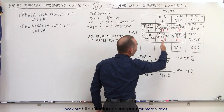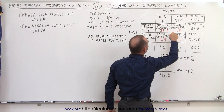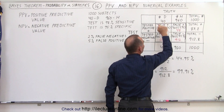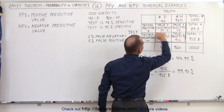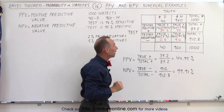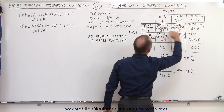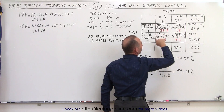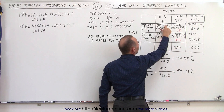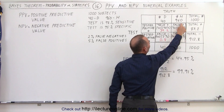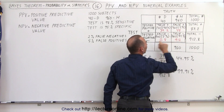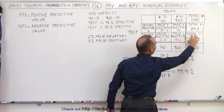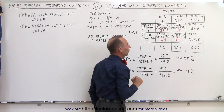On the vertical columns we have what we call the truth columns — 40 that have the condition and 960 that are healthy. On the horizontal axis we have the test rows: this row tests positive, this row tests negative. In the middle we have four squares: the true positives, the true negatives, the false positives, and the false negatives. All the positives must add up to the total positives, and all the negatives must add up to the total negatives.